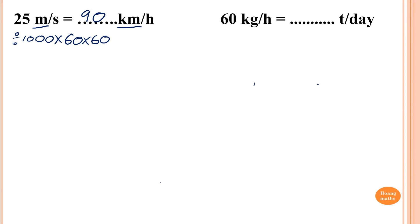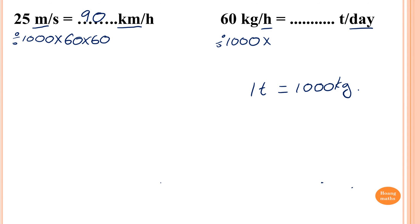You know that 1 ton equals 1,000 kilograms. So from kilogram to tons, you divide by 1,000. And because the first operation is divided, the second one must be times. There are 24 hours in a day, so it is times by 24. So 60 divided by 1,000 times 24 — the answer is 1.44. So 60 kilograms per hour equals 1.44 tons per day.